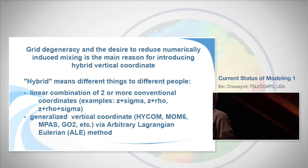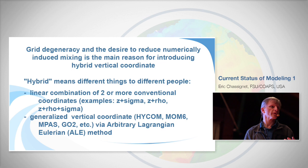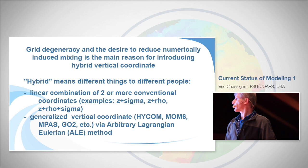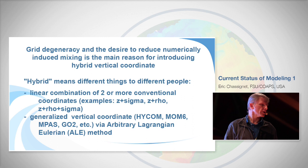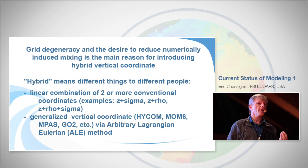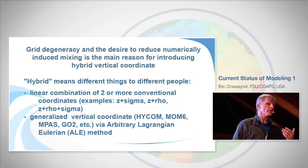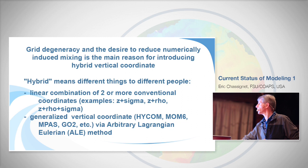HYCOM has been doing generalized coordinate modeling for the past 15 years, and now MOM6 — released about a year ago — also has an ALE (Arbitrary Lagrangian-Eulerian) method to deal with vertical velocity and interface displacement. The M-PAS at Los Alamos and MPAS at NASA are going in that direction too. The main advantage of this approach is that you can still run the model in purely Z or purely isopycnal mode, but you also have the ability to choose other coordinates and evaluate the impact of vertical coordinate choice.